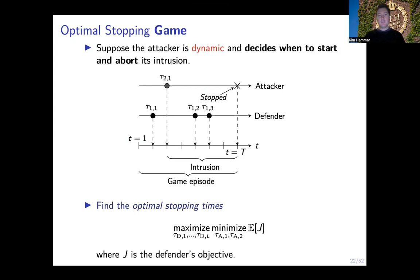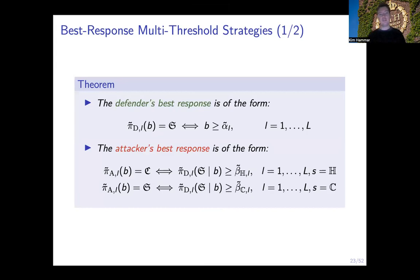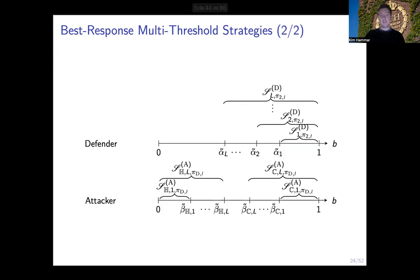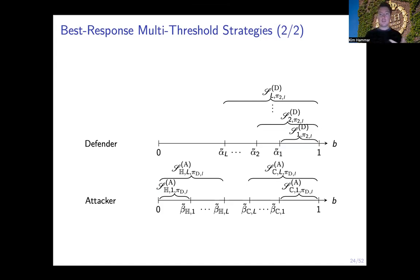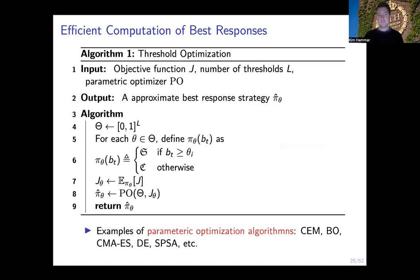In this case we have an optimal stopping game rather than an optimal stopping problem. Based on our previous analysis, for any attacker strategy the best response of the defender is a multi-threshold strategy. Conversely, for any defender strategy the best response of the attacker is also a multi-threshold strategy — the difference being that the attacker has twice the number of thresholds: one set for deciding when to start the intrusion and another for deciding when to abort. Knowing that best response strategies of this type exist, we can compute them efficiently by directly parameterizing strategies with the thresholds and learning them using stochastic approximation.